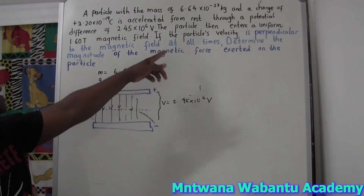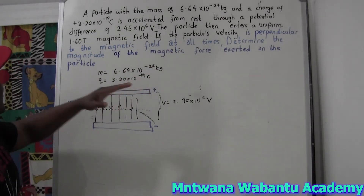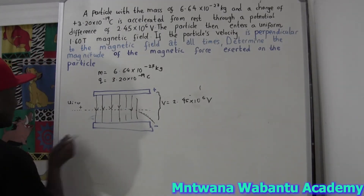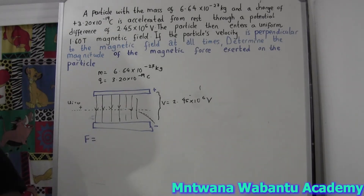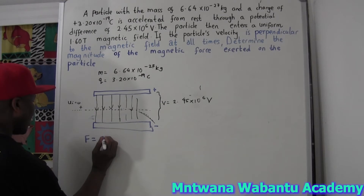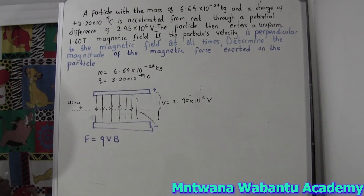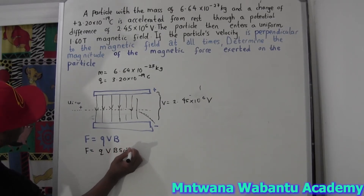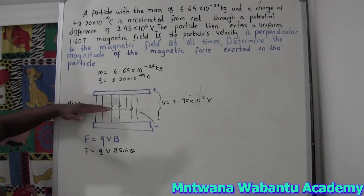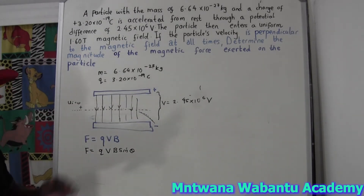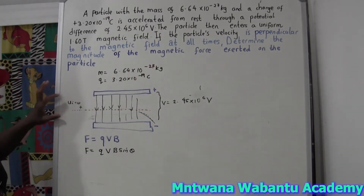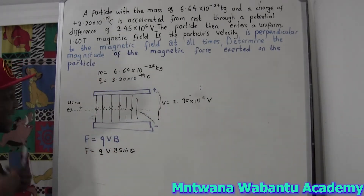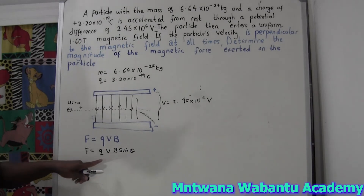If the particle velocity is perpendicular to the magnetic field at all times, find the magnitude of the magnetic force. So we want the force. We have a formula: force equals QVB. But for most cases, it must include sine of the angle, so force equals QVB sine theta. Because it's going to make an angle — it will go either this way or that way depending on the sign of the particle. If it's an electron, it's negative and will be attracted to the positive plate. If it's positive, it will be attracted to the negative.